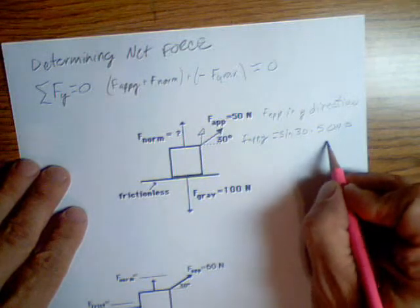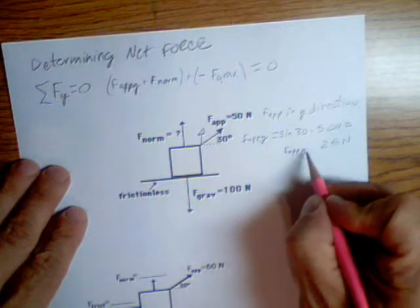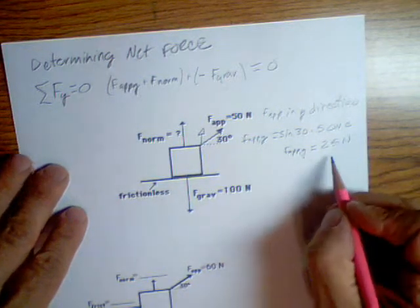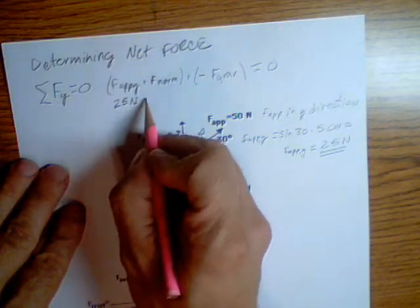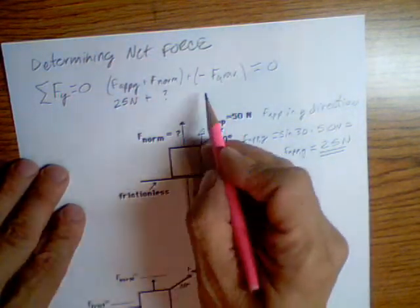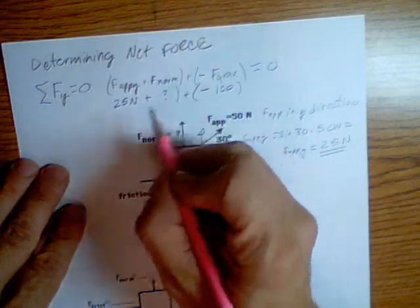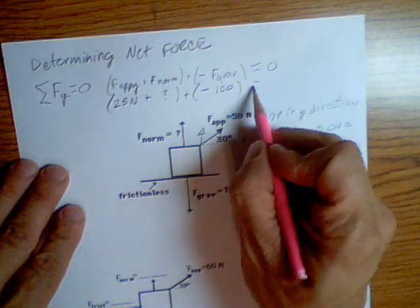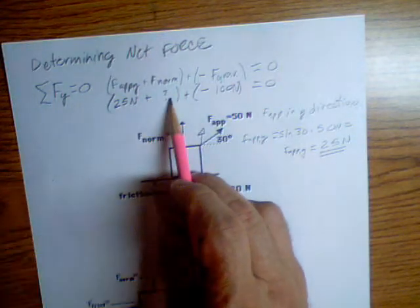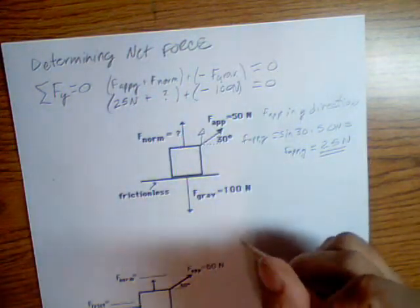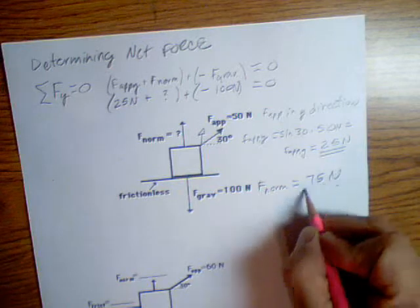So force applied in the y direction is 25 newtons. We know that, but we don't know normal force. We know force of gravity is 100. In order to figure this out, all of this is set to zero. It looks like the normal force has got to be 75, because it's not moving up or down. So the normal force is 75 newtons.